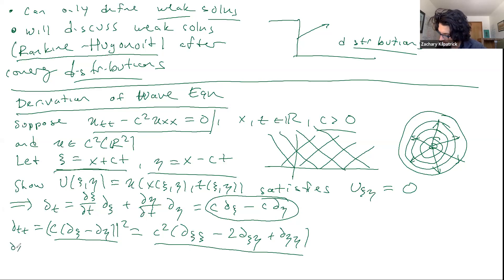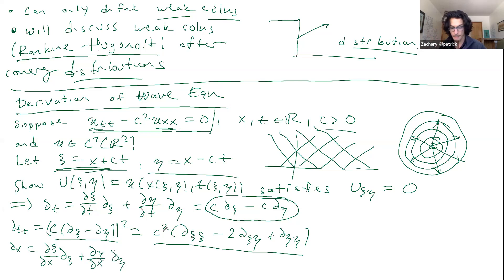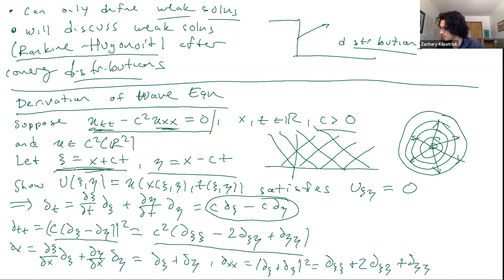What about my partials with respect to x? To differentiate with respect to x in the new coordinates I do the same thing: D_x equals (Dψ/Dx)·∂ψ + (Dη/Dx)·∂η. Since Dψ/Dx = 1 and Dη/Dx = 1, I get ∂ψ + ∂η. Then D_xx is just the square of that operation: ∂ψψ + 2∂ψη + ∂ηη.